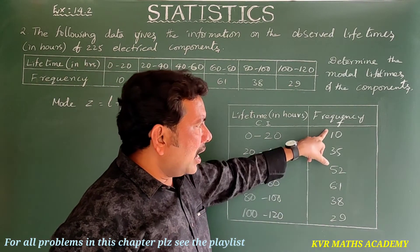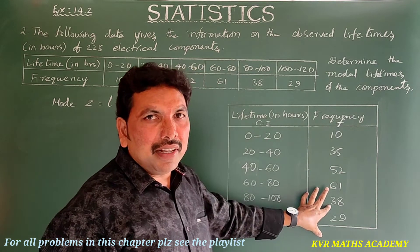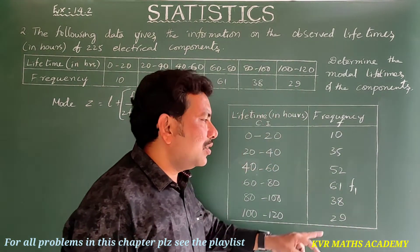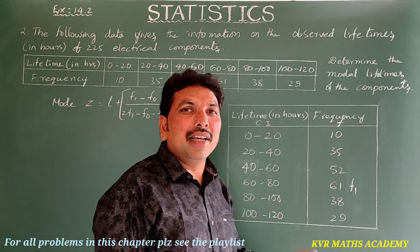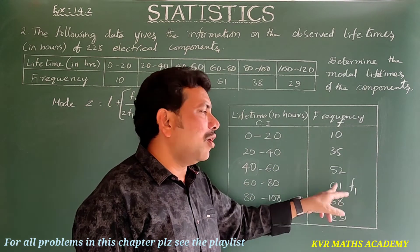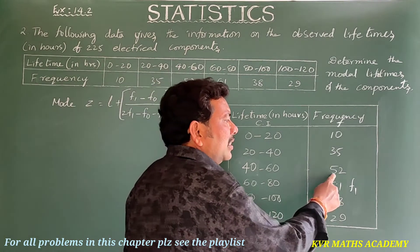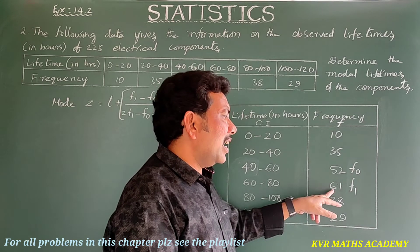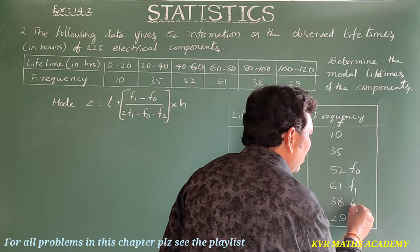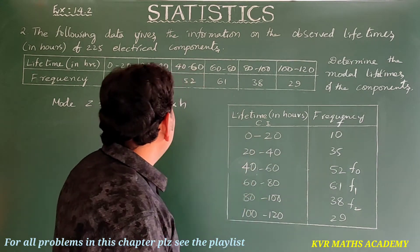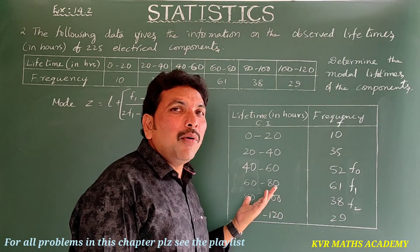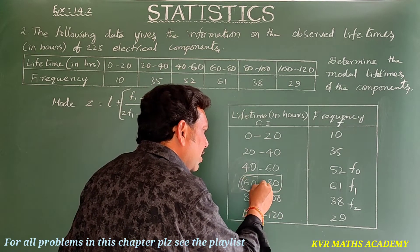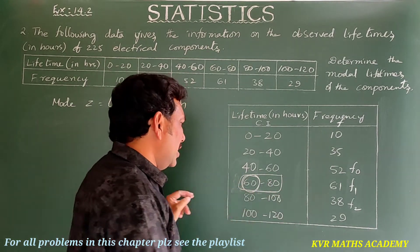The highest frequency is 61, so the class 60–80 is the modal class, and f1 = 61. The frequency of the class preceding the modal class is 52, so f0 = 52. The frequency of the class succeeding the modal class is 38, so f2 = 38. The lower boundary l of the modal class is 60.